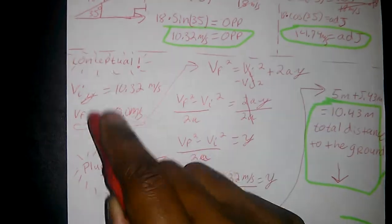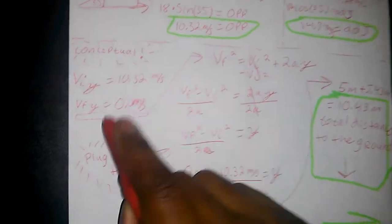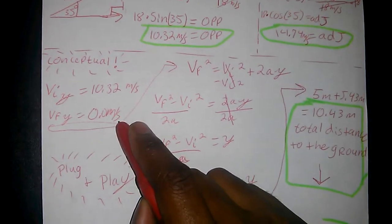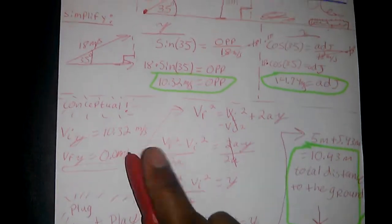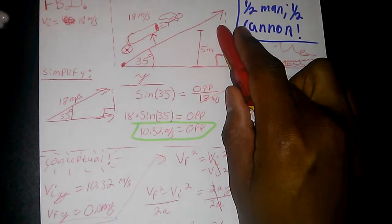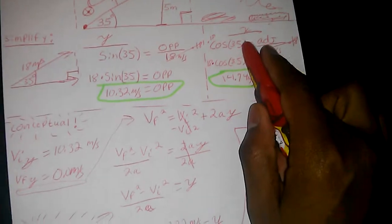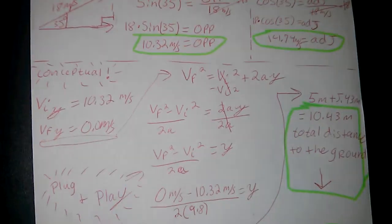Conceptual. Velocity initial. Why? Velocity final. Why? Want to know why? Because he's going to come to a stall point. He's not going to go up anymore. He's going to reach a peak and start progressing down.